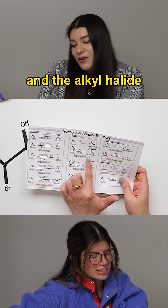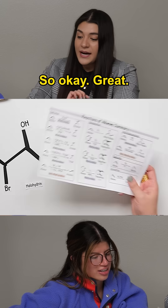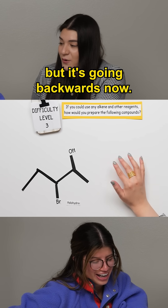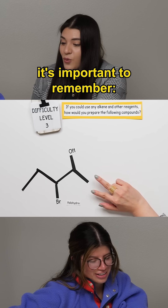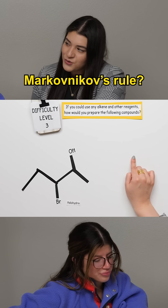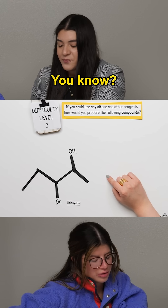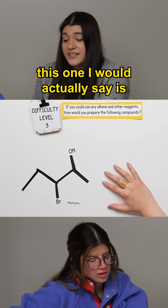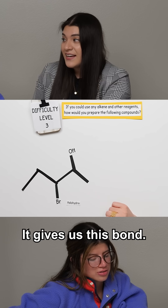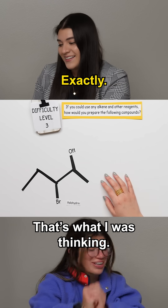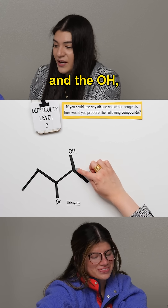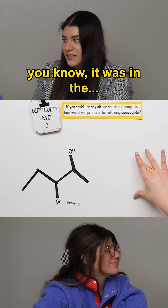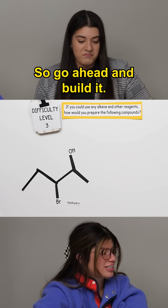This is the one we're looking for — with the alcohol and the alkyl halide, or the halogen. Now going backwards, this is where it's important to remember: does this follow Markovnikov's rule, does it follow anti-Markovnikov's rule? This one I'd say is easy because it gives away the bond — I already have the bromine and the OH, that's where I had to have added it. The alkene was already there.